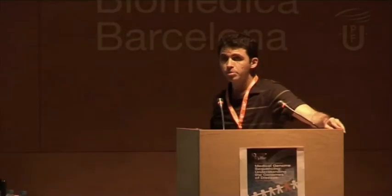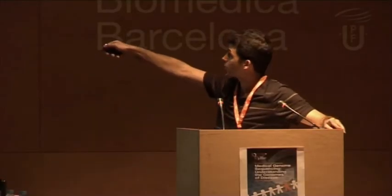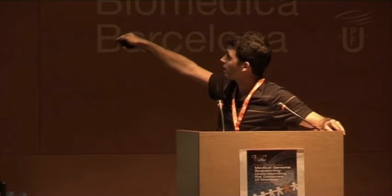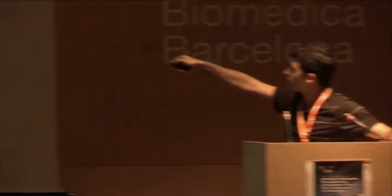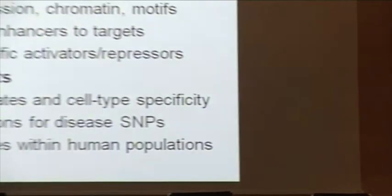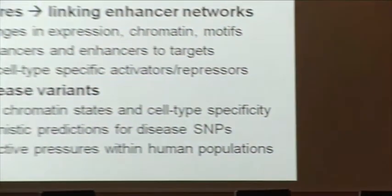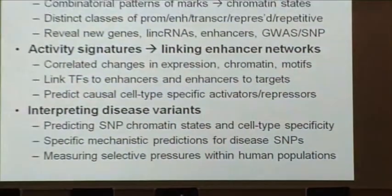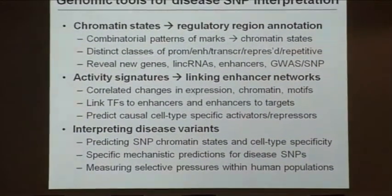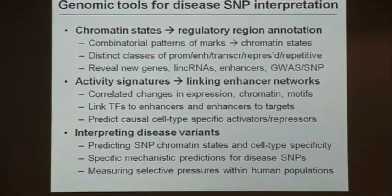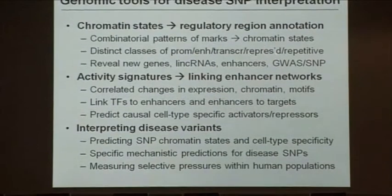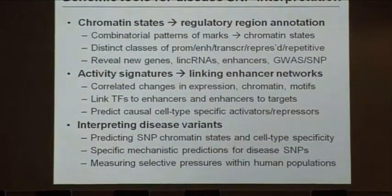So that's a very brief introduction to chromatin states, which enabled us to annotate regulatory regions systematically, using combinations of chromatin marks to reveal a new language for interpreting many tracks together. We've revealed in a completely de novo way distinct classes of promoters, enhancers, transcribed, repressed, and repetitive states.